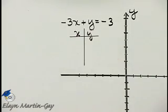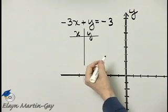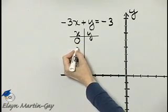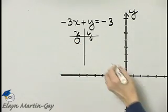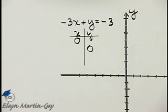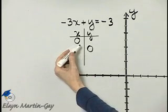Let's graph this linear equation in two variables. Why don't we go ahead and find the x and y intercepts? If we let x be 0, we'll have the y intercept. And if we let y be 0, we'll find the x intercept. And then we'll find another ordered pair solution in just a moment.